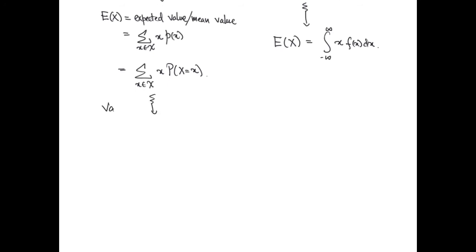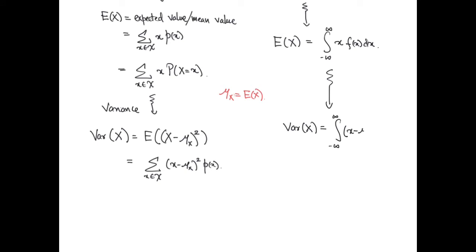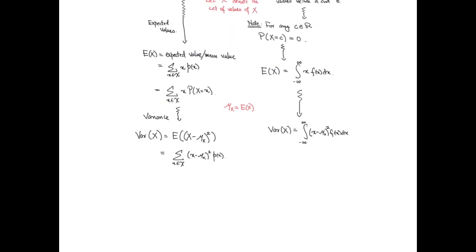The variation of x from its mean or the variance of x is the expected value of x minus mu x the whole squared. This is the following sum where mu x is the expected value of x. To compute the variance for a continuous random variable, we calculate the integral from minus infinity to infinity of x minus mu x whole squared fx dx.